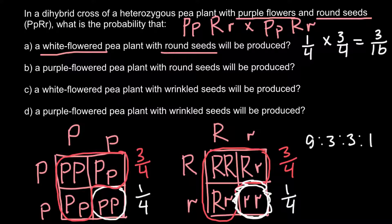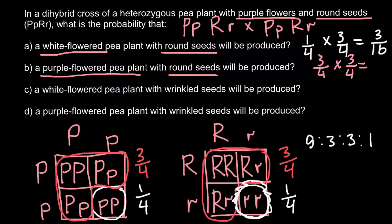Now question B: a purple-flowered pea plant with round seeds. Purple flower probability is three-quarters, and round seeds probability is also three-quarters. These are two independent probabilities, so we use the multiplication rule: three-quarters times three-quarters equals nine-sixteenths.